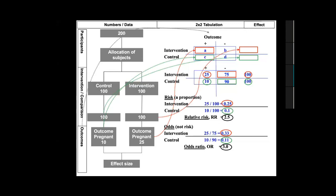I'd like you to know that the choice of effect measure influences the number we obtain for effect size. The number is 2.5 because the effect measure is relative risk, and 3.0 because the effect measure is odds ratio — both emerge from the same two-by-two table. Eva says she understands the numbers but hasn't had time to appreciate the difference between risk and odds — and she is not the only one.